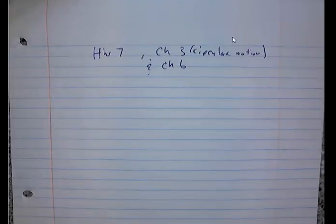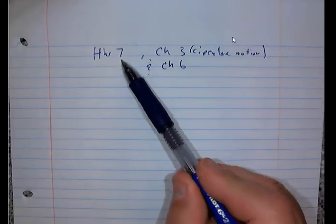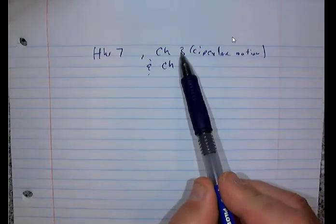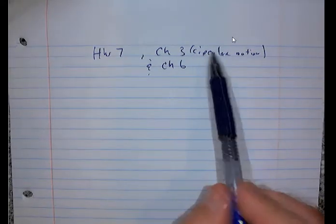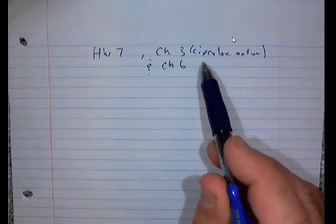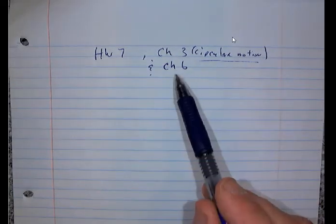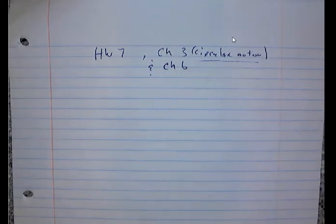Hi, this is Dr. Bricker here with some hints for homework number seven, which covers a little bit of chapter three — three questions from chapter three on the circular motion part we didn't cover before — and then chapter six, which is circular motion and forces associated. So let's take a look at this.